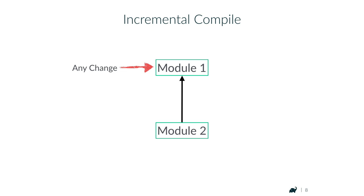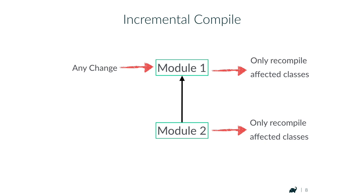That is where incremental compile comes in. With incremental compile, whatever change is happening, you only recompile the affected classes in the module where the change is happening, as well as in the modules that depend on that module. It is complementary to compile avoidance, and incremental compile would be hugely beneficial for Android projects.